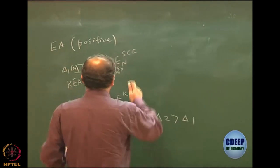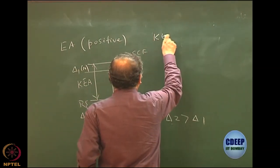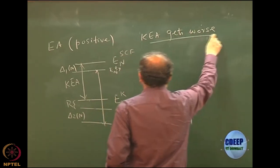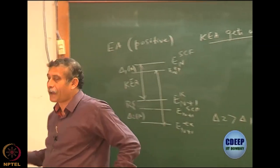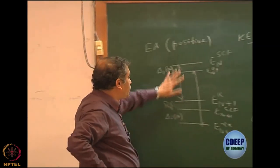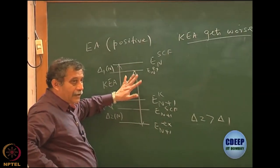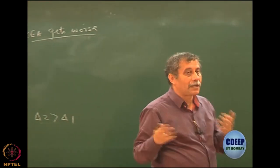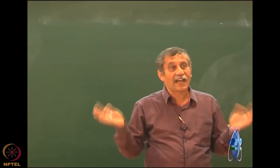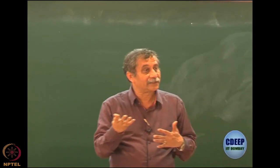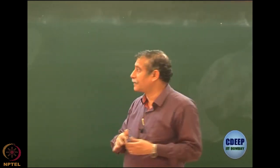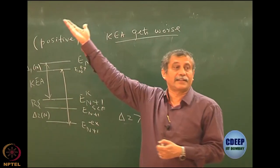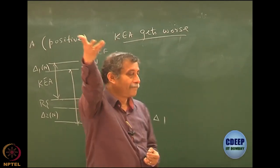Wherever there is a positive electron affinity, Koopmans' EA gets much worse. Koopmans' EA is very bad because the errors that have been neglected — correlation and SCF relaxation — are actually working in opposite directions, making the problem much worse. Whereas for IP, fortunately it works in the other direction, so the errors kind of cancel. This is simply because N+1 is lower than N, whereas N-1 is higher than N — that is the main reason why it happened.